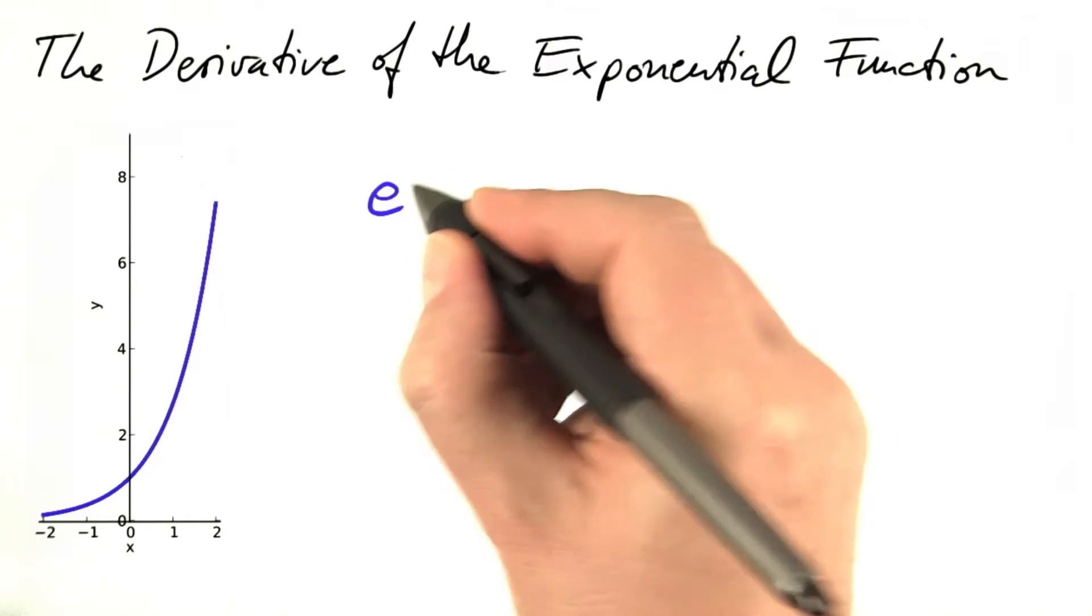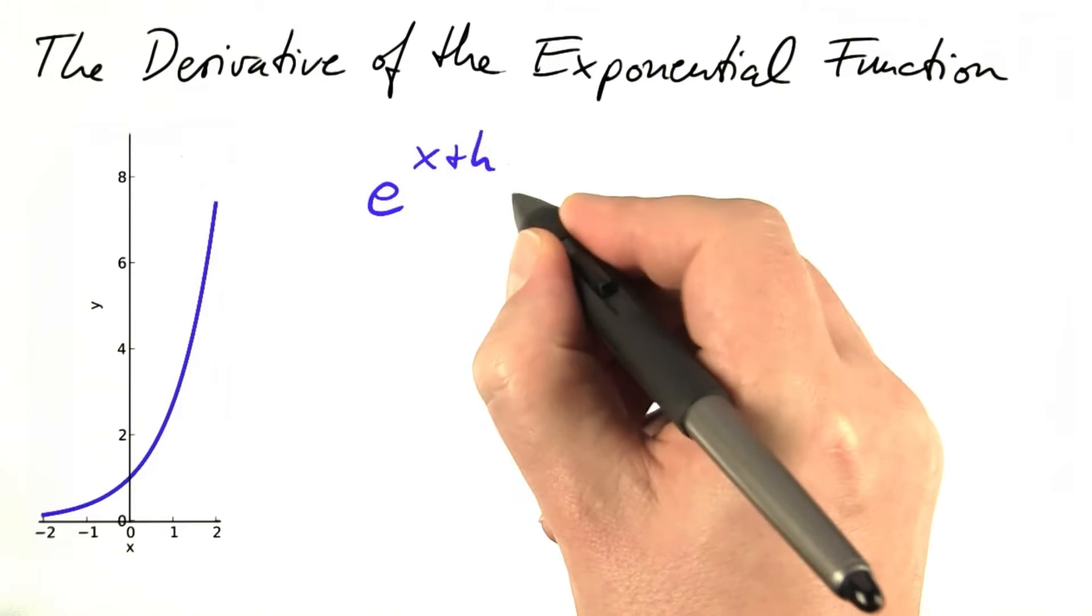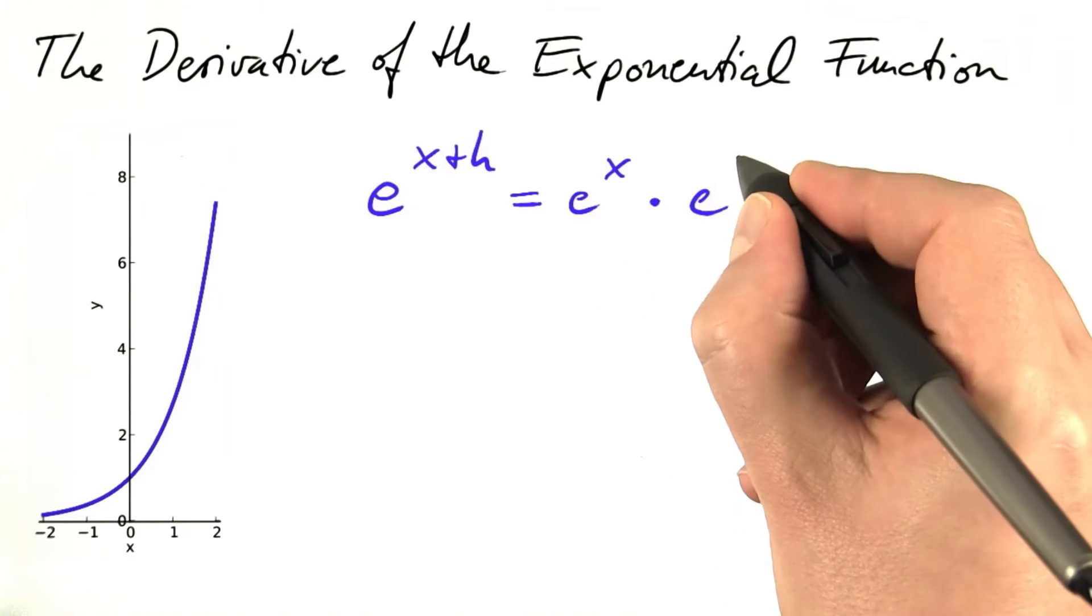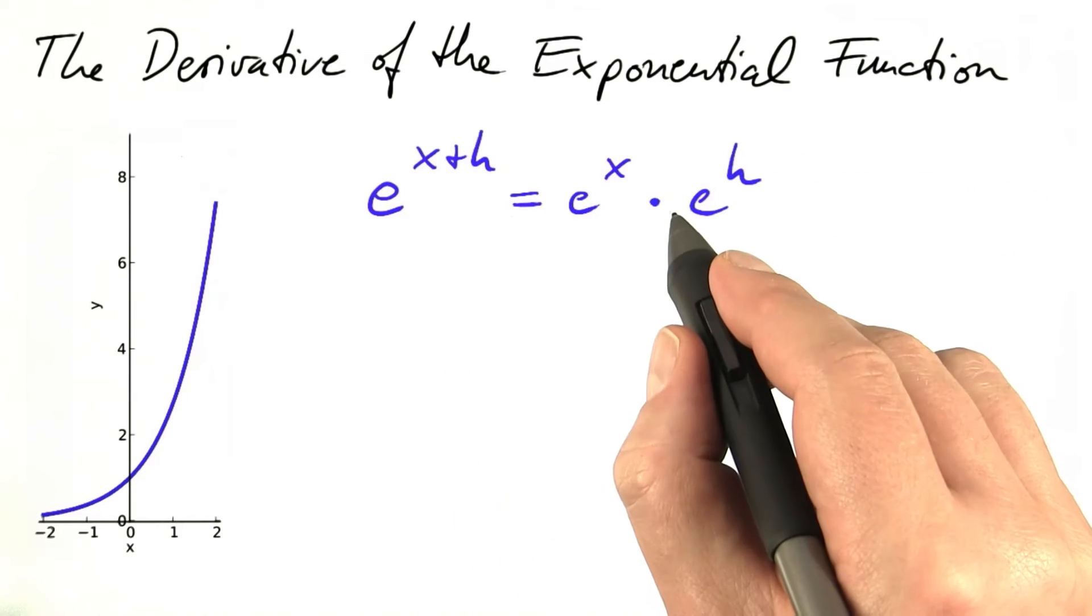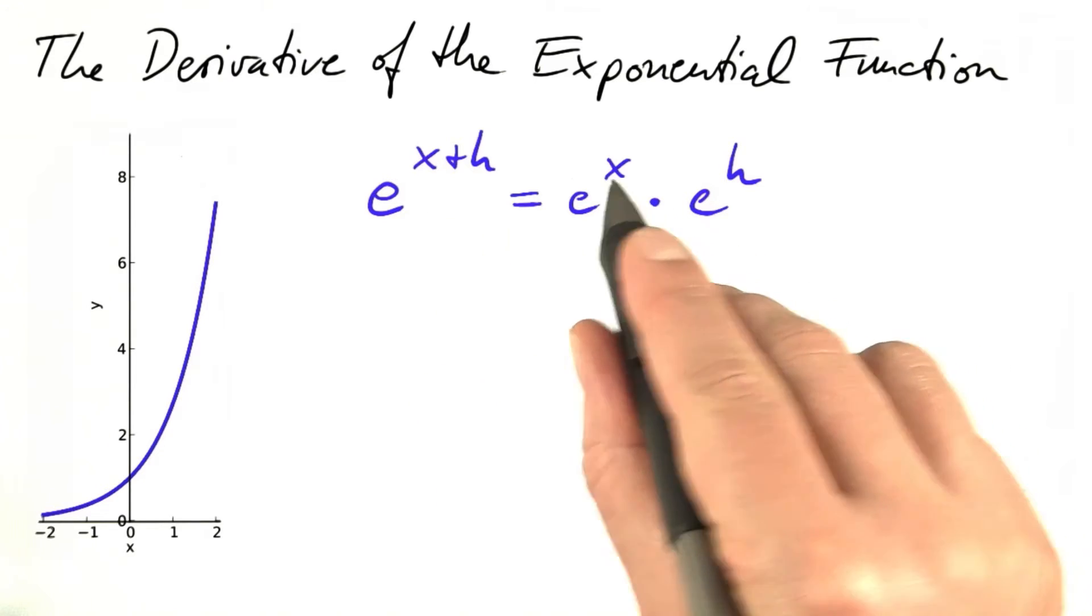With the help of this equation, e to the power of x plus h equals e to the power of x times e to the power of h. This looks rather simple, but this is the key to compute the derivative for every x.